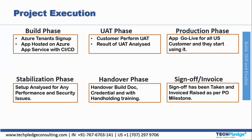After the stabilization phase, the Handover phase begins. All build documents and credentials are handed over along with handholding training. Everything is accepted at this point — the build, UAT, production are all successful, performance and security are confirmed in stabilization, and then we hand everything over.